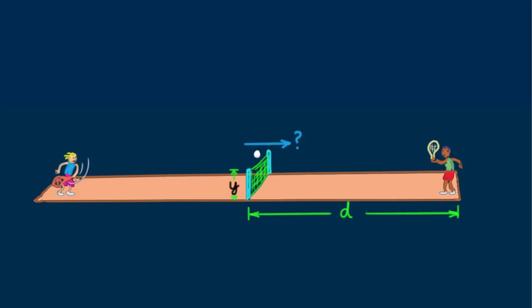We say from rest because the initial vertical component of velocity is zero when the ball's at its highest point in the path, moving horizontally, just clearing the net.